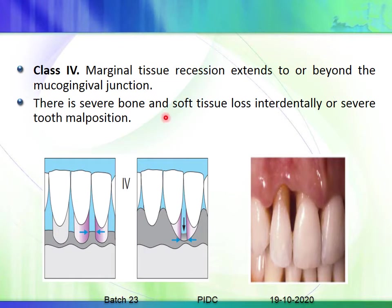Class 4: marginal tissue recession that extends to or beyond the mucogingival junction with severe loss of bone or soft tissue interdentally, or severe tooth malposition. In those cases it falls under the Class 4 category.